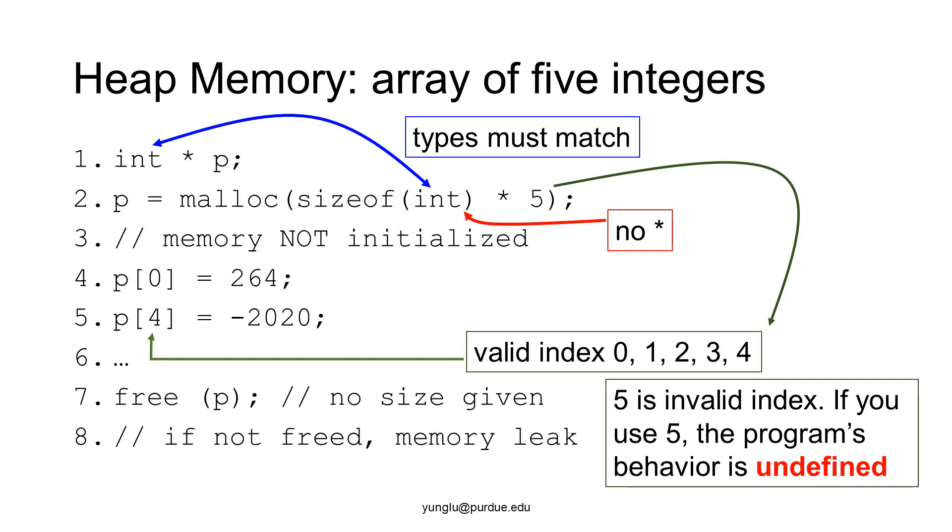After malloc, we can use p as the name of an array and give correct indexes. If the array has five elements, valid indexes are zero, one, two, three, and four. Please be aware that five is invalid.